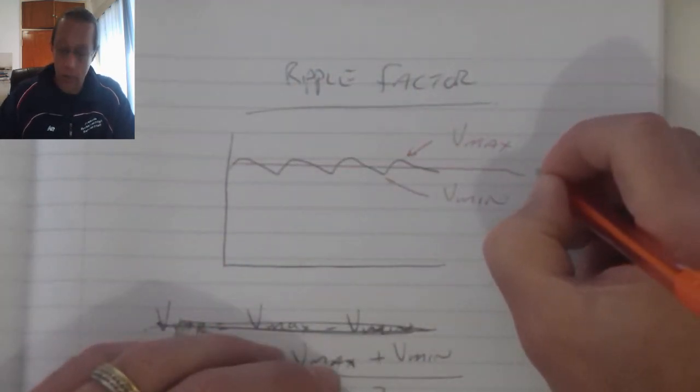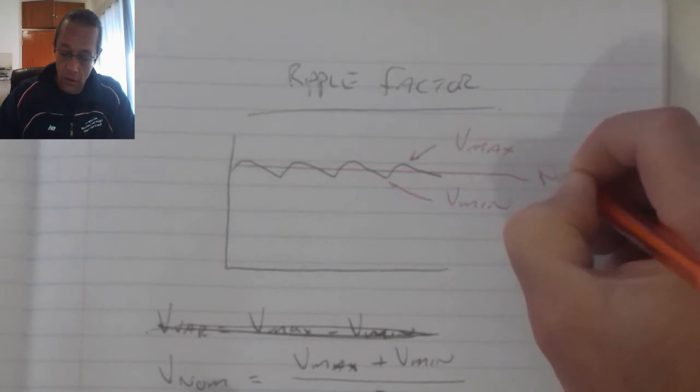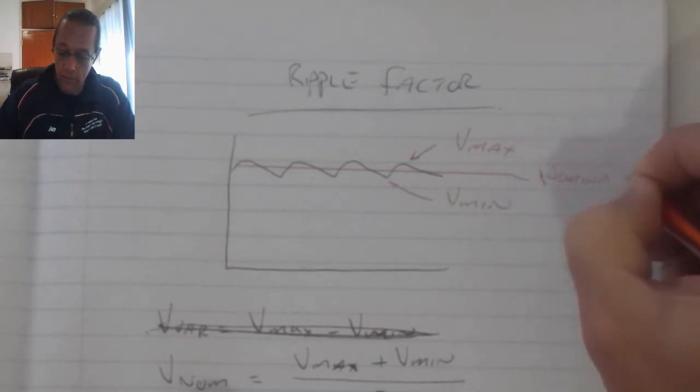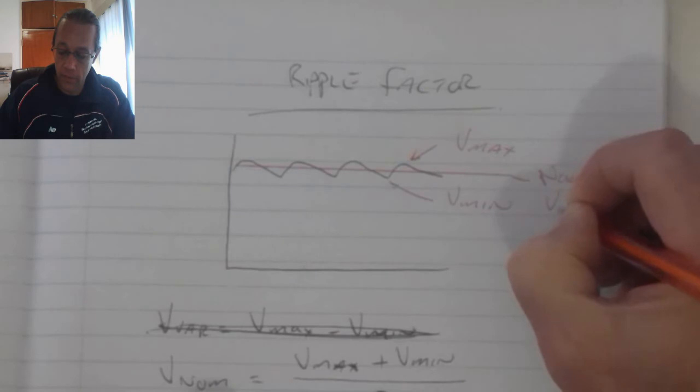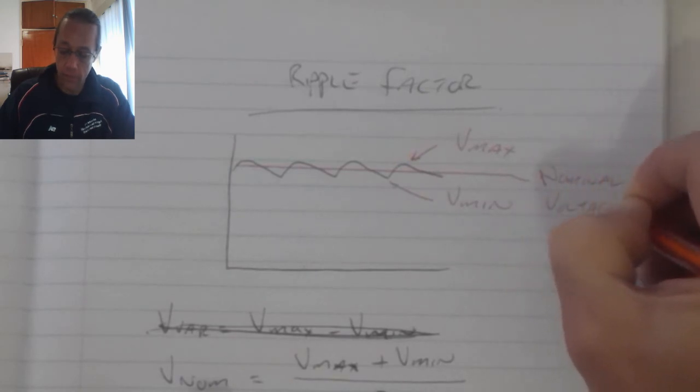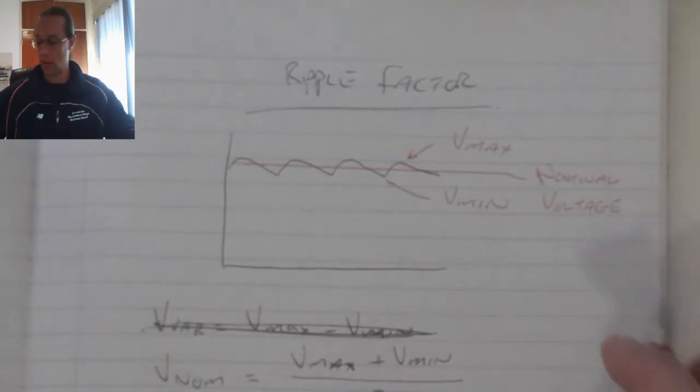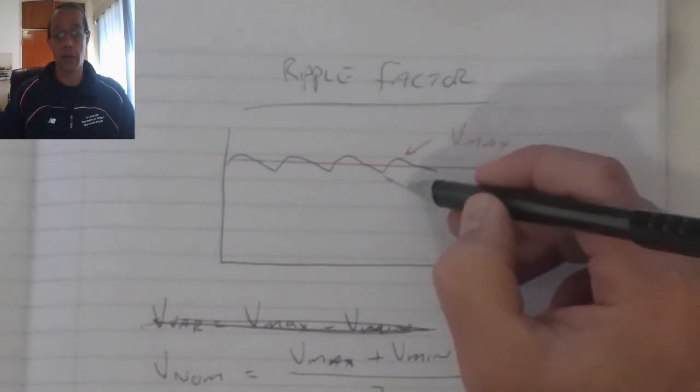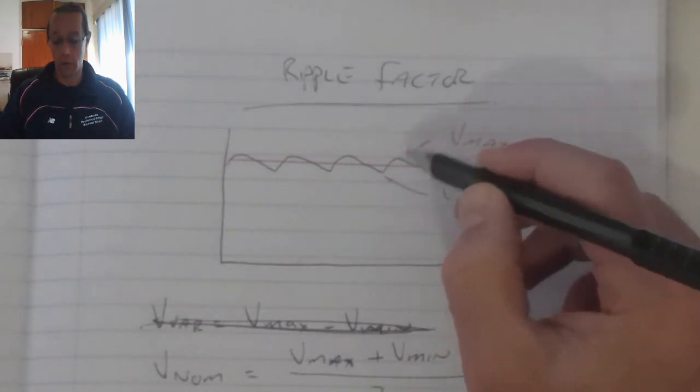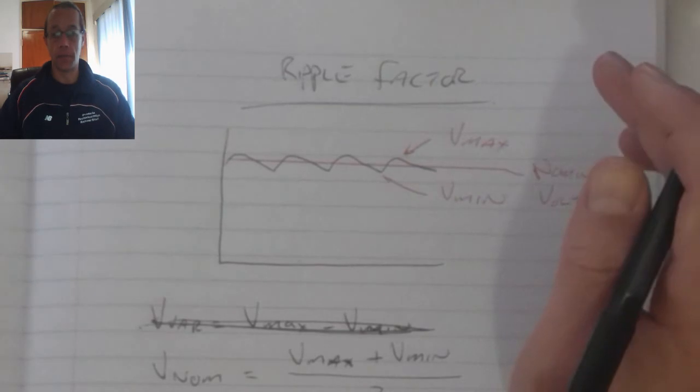That is my nominal voltage. In other words, it's basically the average value between the top and the bottom of my ripple.